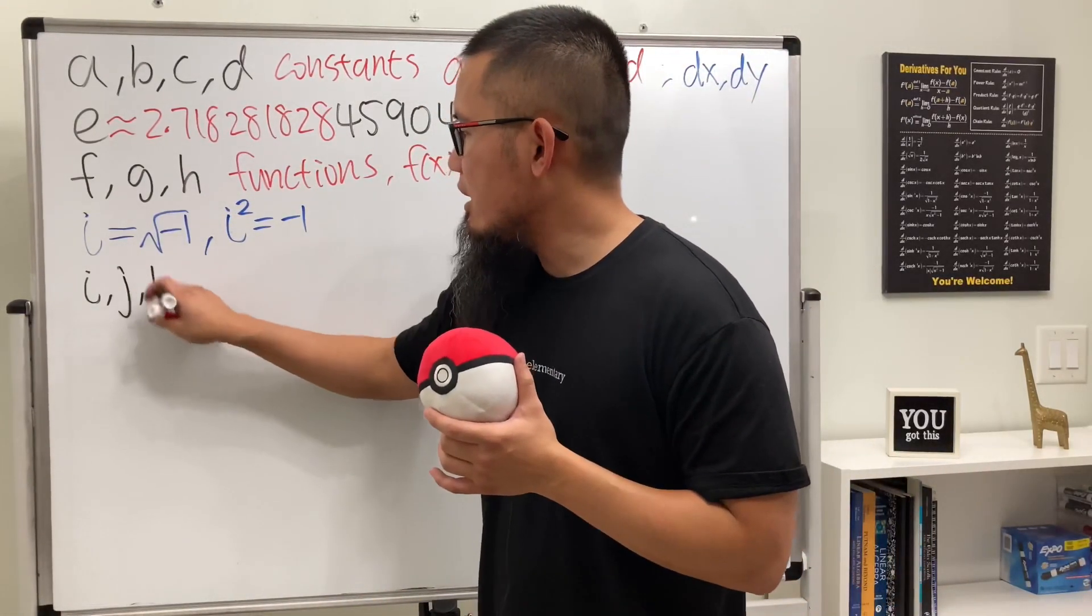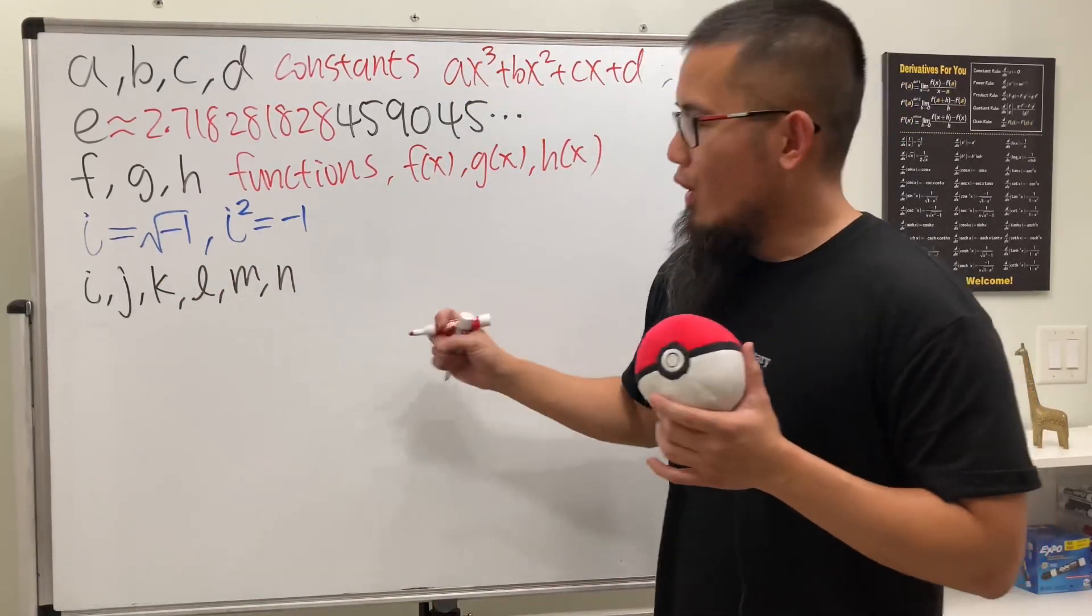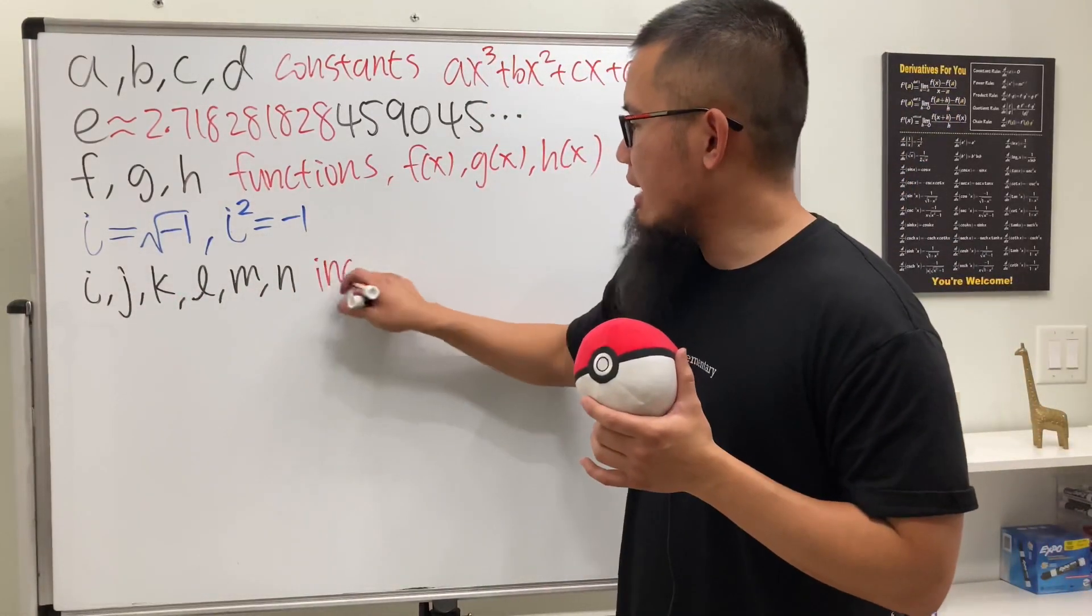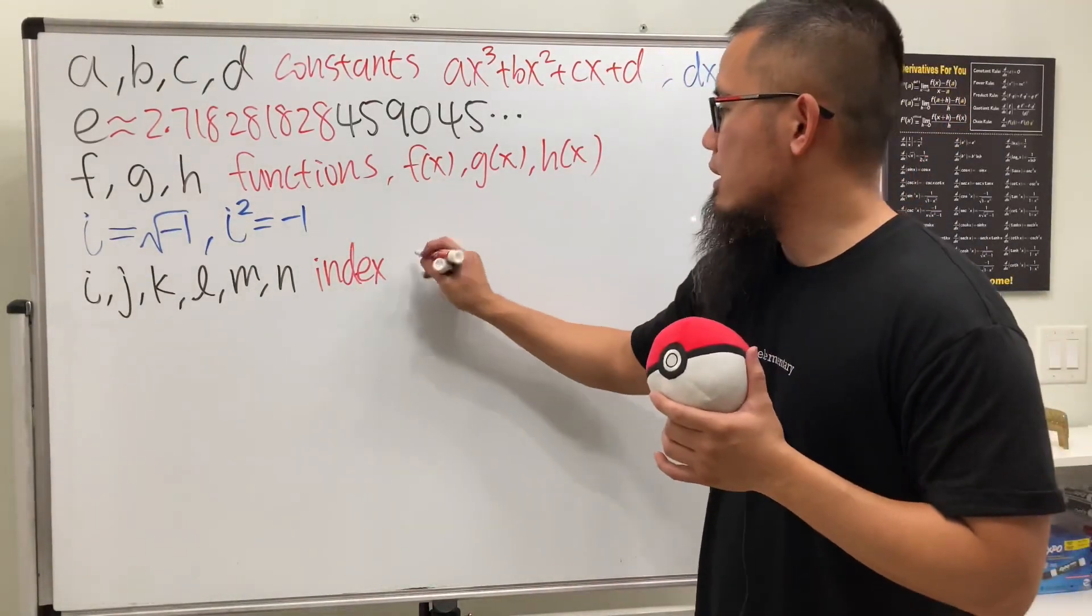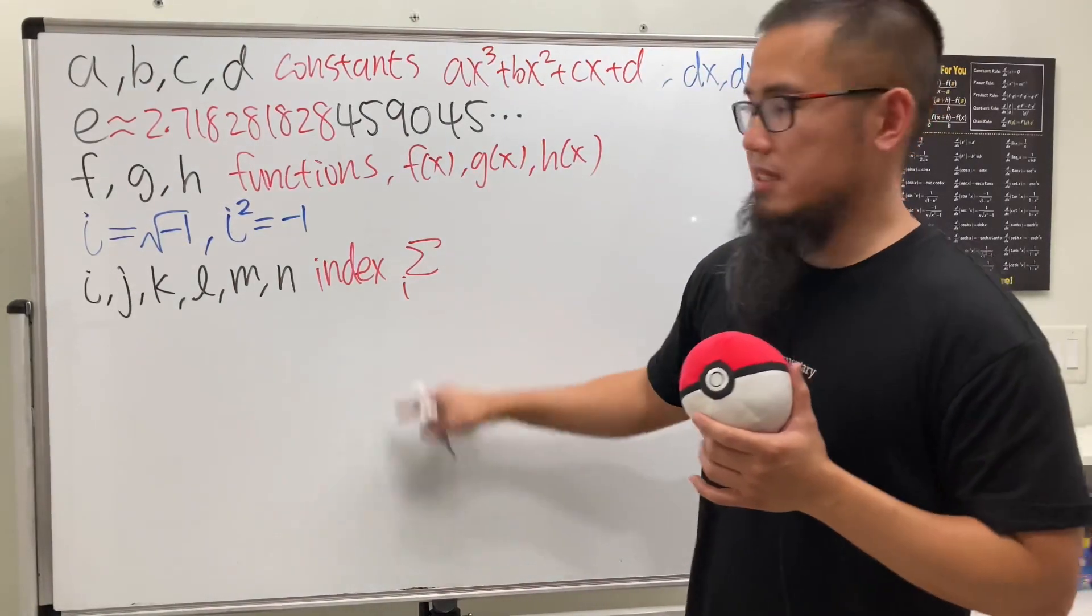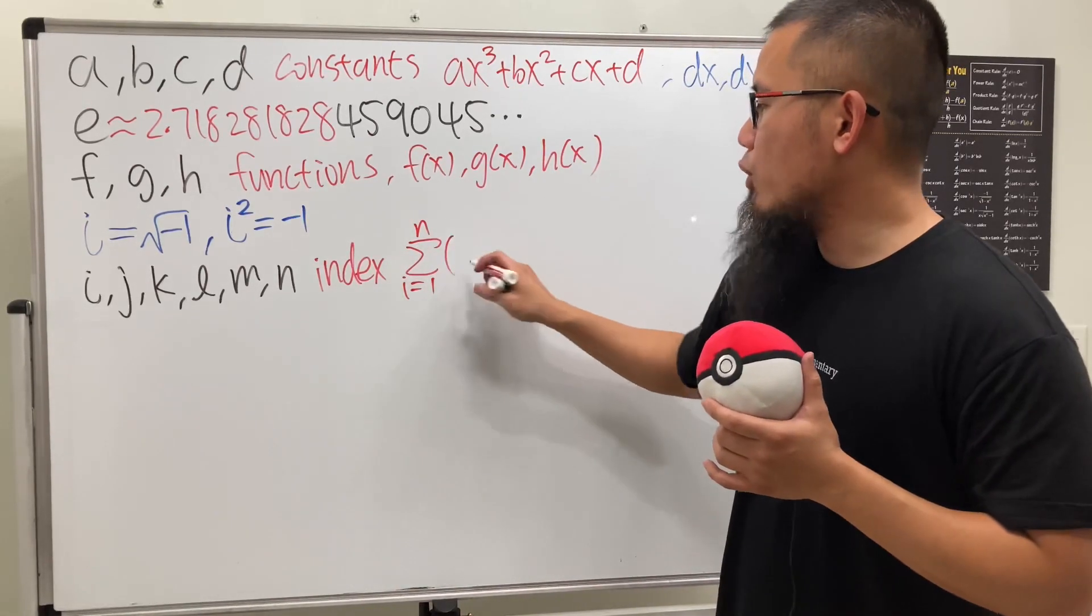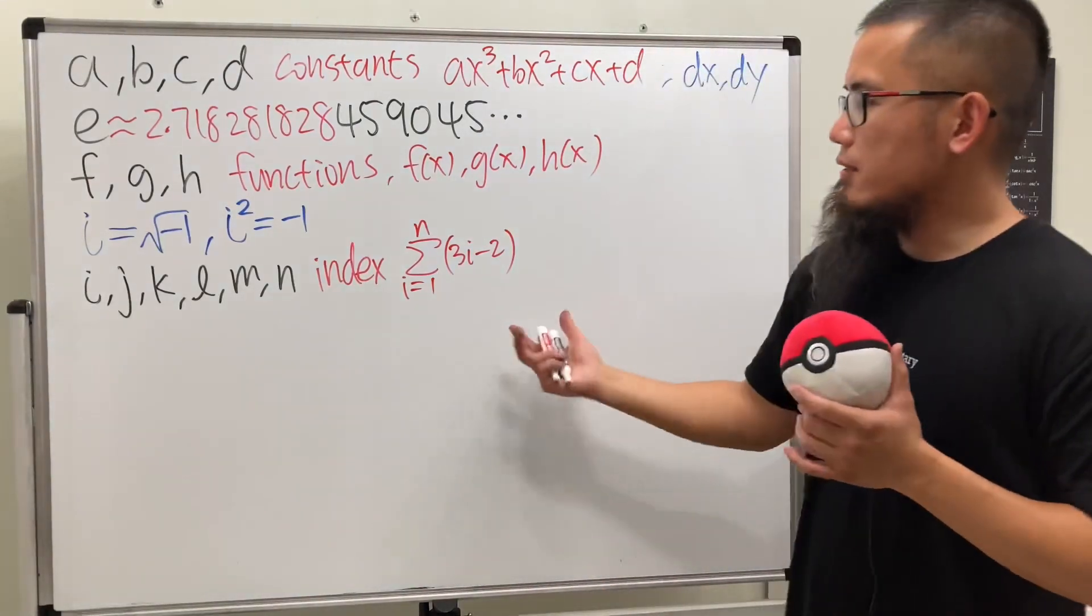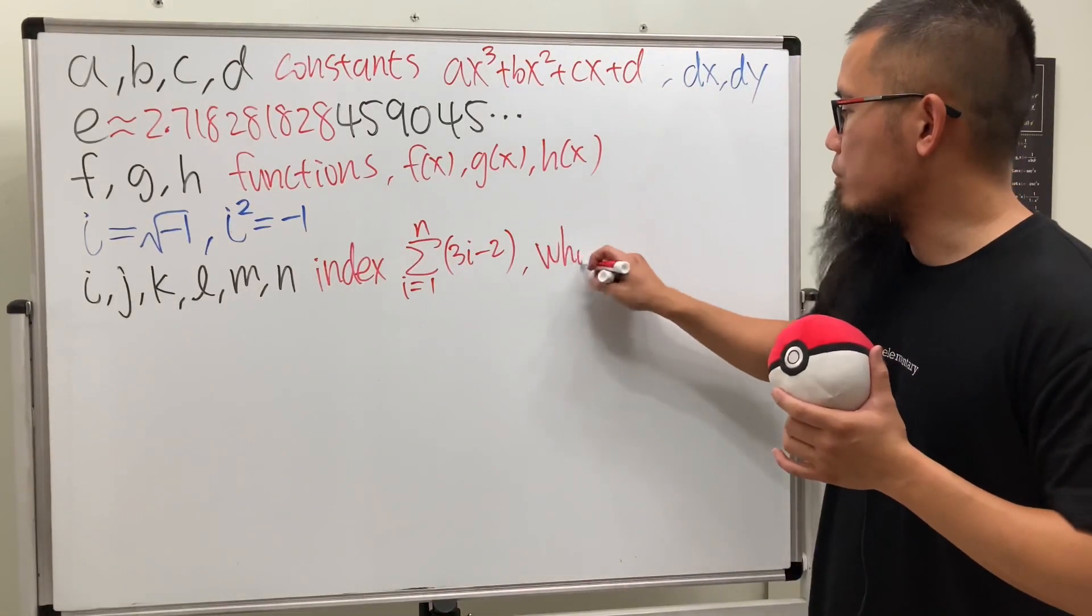I'm going to put i, j, k, l, m, and n all together. Usually when I see these, they are for the index. What I mean by that is like the summation: sigma summation with i as the index going from 1 to n, and then you put in a formula like 3i - 2.